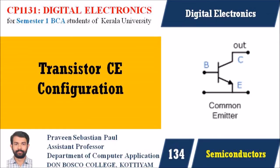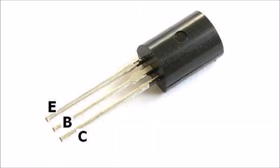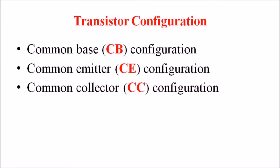Hi students, I am Pravind Sebastian Paul. In this lecture we are discussing the common emitter configuration of a transistor. In the previous lectures we had discussed what is a transistor. A transistor is a type of electronic semiconductor device used for switching and amplification, and there are three different configurations available: CB, CC, and CE. In this lecture we are discussing the common emitter, that is CE, configuration.